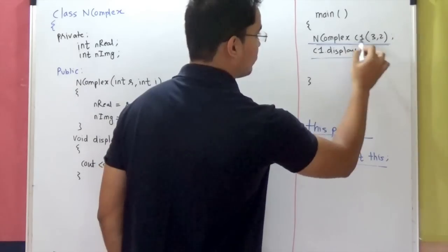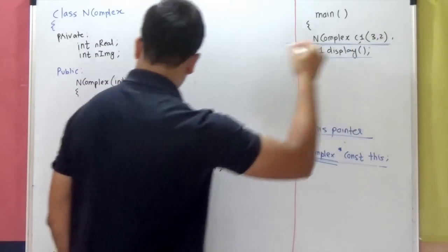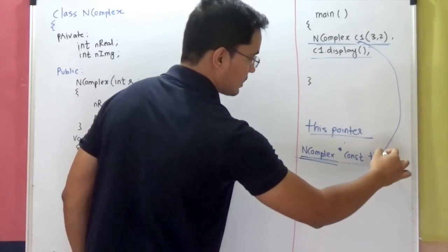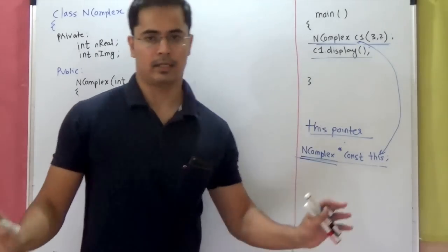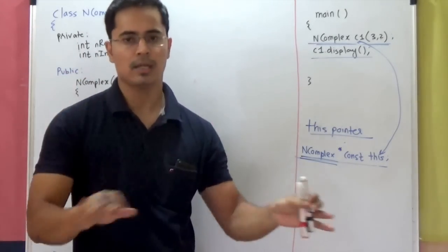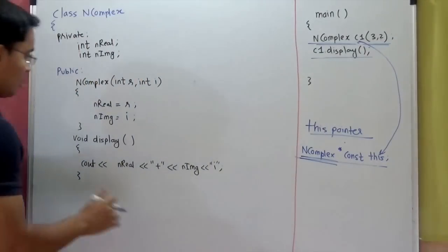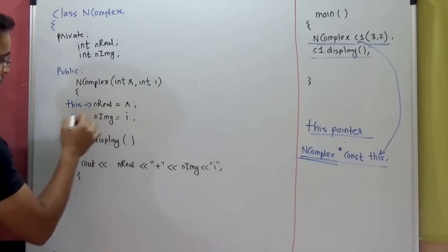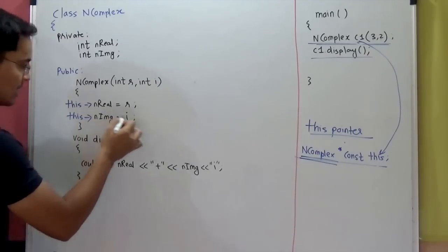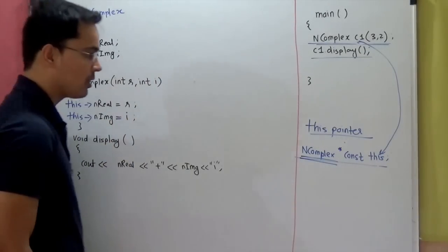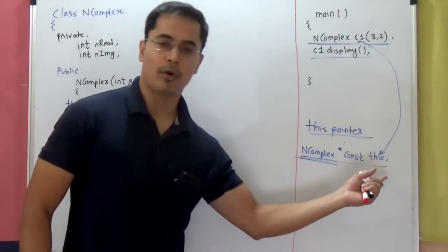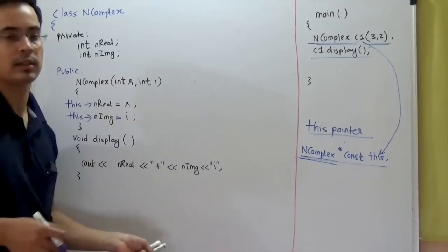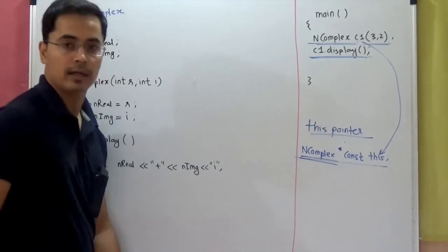So in this case, when we are creating object C1, C1 is invoking the NComplex parameterized constructor, so C1's address will be assigned to this. This is hidden and implicit — you don't have to mention it anywhere. It is passed to every member function implicitly. So I can write the constructor code in another manner: this->nreal = R, or this->nimaginary = I. Because implicitly, I am getting this pointer which stores the address of the current object.